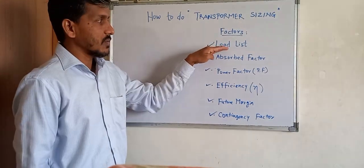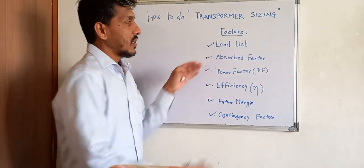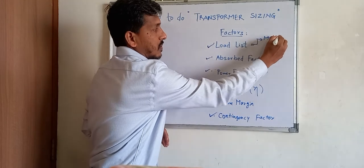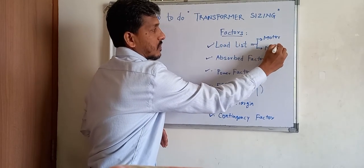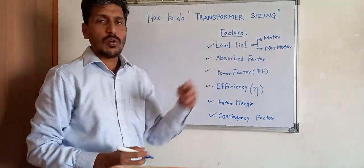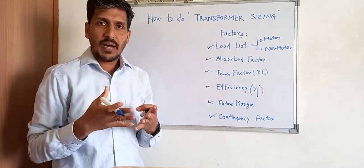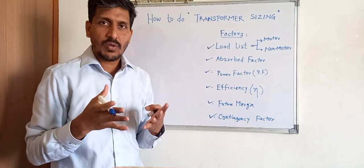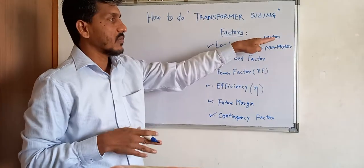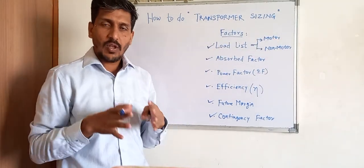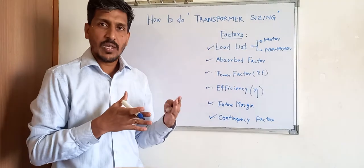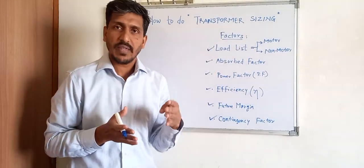What is the load list? The load list is nothing but the list of all loads — motor loads and non-motor loads. Motor loads means all induction motor loads. Normally in a plant there are 250 kW, 400 kW, or 500 kW motors. Synchronous motors are rare and are normally connected on the HV side, so we're talking about loads connected on the LV side.